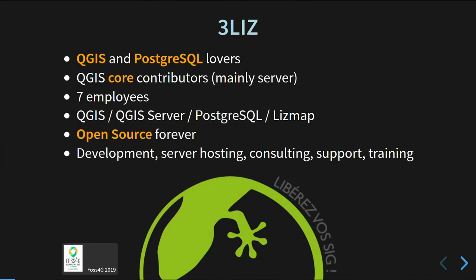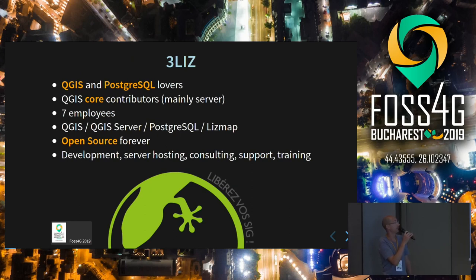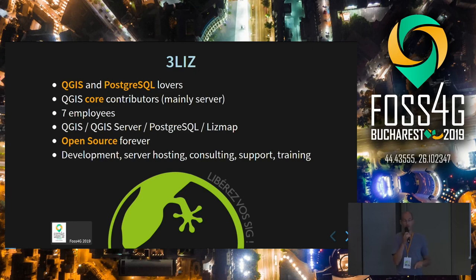We want to make a feature frenzy presentation — it's more about the project, the key features, and the roadmap for the next version. At Three Leases, we work only with open source software like QGIS, PostGIS, and LizMap. We are core contributors to QGIS Server, we love open source, and we provide different types of support.